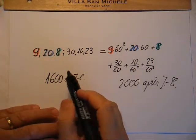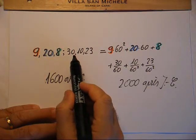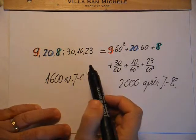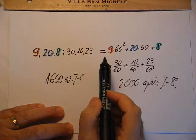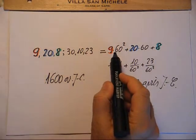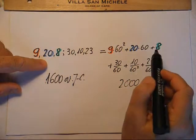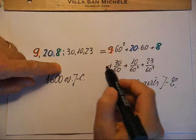1600 avant Jésus-Christ, 9,20,8 point 30,10,23 s'écrit maintenant, 2000 après Jésus-Christ, 9 fois 60 au carré plus 20 fois 60 plus 8, plus